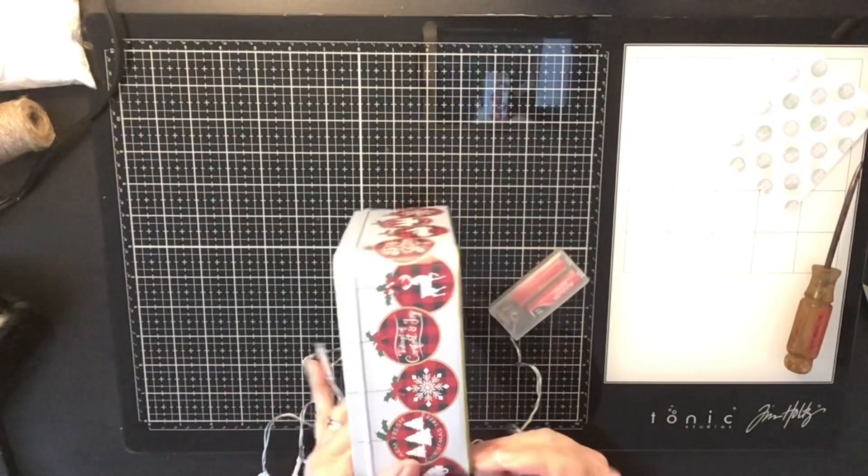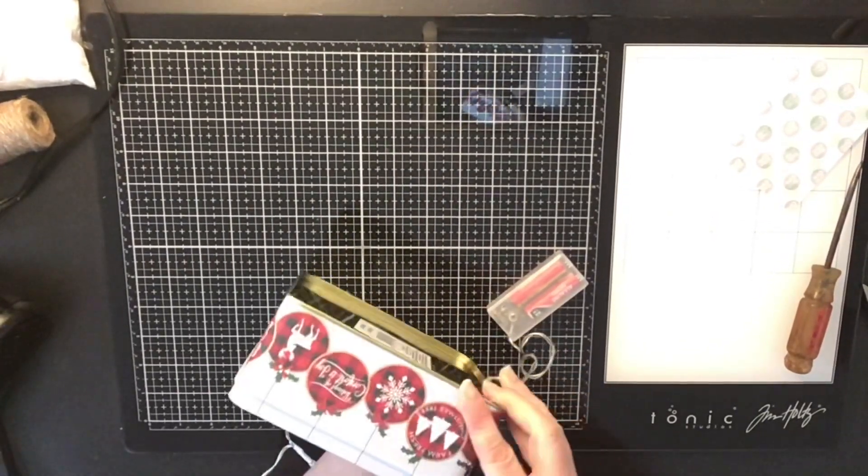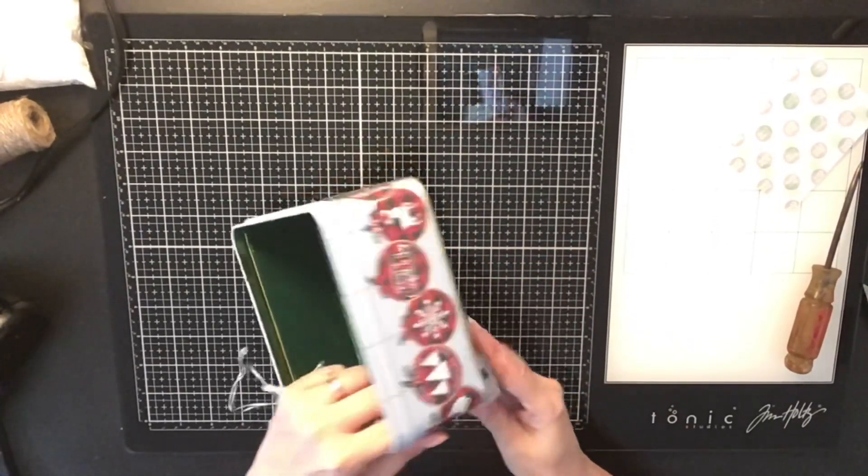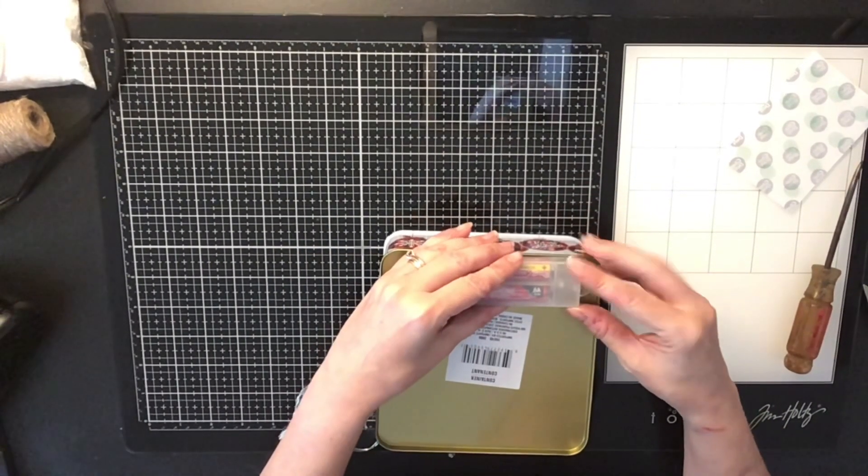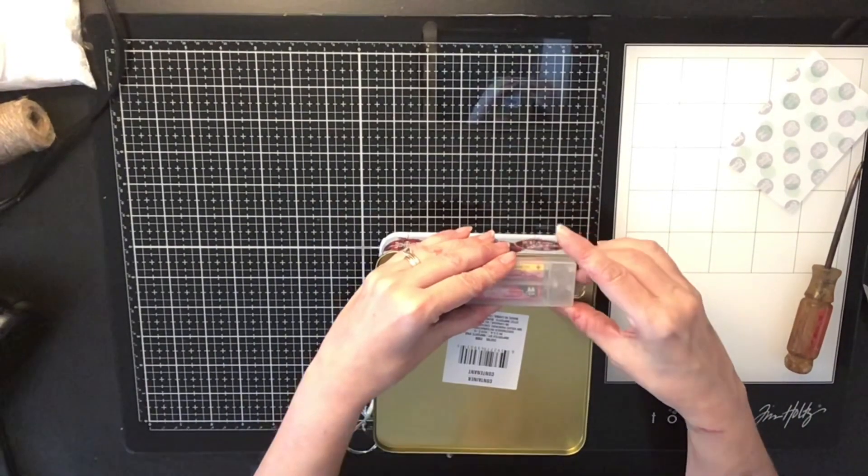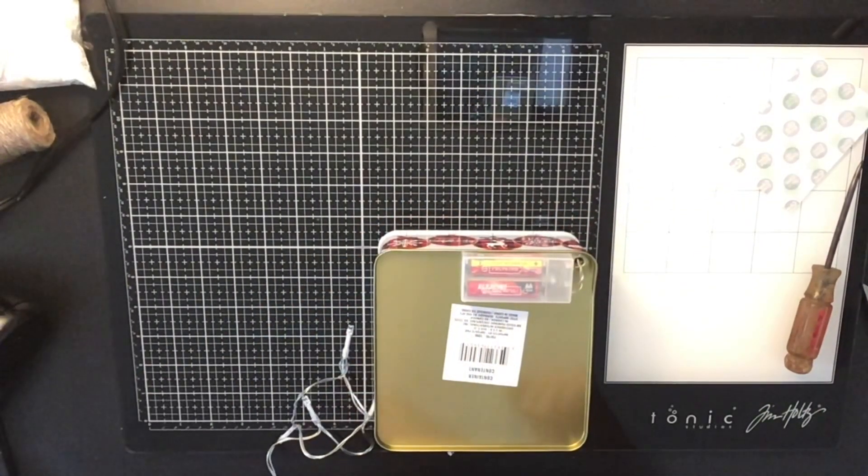And then there's a rim on the side of the trim of the tin on the inside. And I'm going to use my glue dots to glue that down as well. But first I'm going to take my battery pack and I'm going to fasten it to the back of the tin.